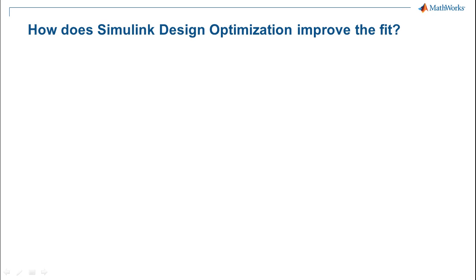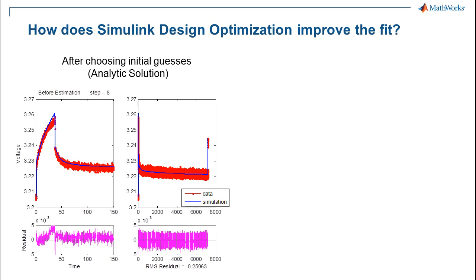Let's take a look at how the results look after choosing our initial guesses from our analytic solution, and then after the final layered estimation with Simulink Design Optimization. Here's another result plot where the right side shows the full voltage data for one estimation task, and on the left we've zoomed in on just the area around the pulse event. You'll see the curve fitting from our analytic solution did a pretty good job of fitting the model to the data.